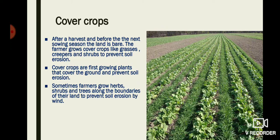Cover crops like grasses and creepers not only hold the soil tightly by their roots — grasses have fibrous roots which hold the soil tightly — but their leaves also spread over the surface of the land, preventing the soil from being directly washed away by rainwater and blown away by wind. In this picture, you can see grasses sown between two rows of crops, by which soil erosion can be checked.